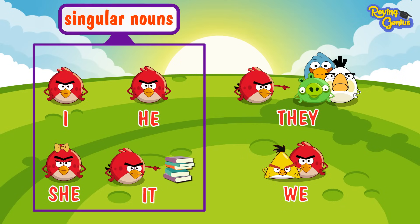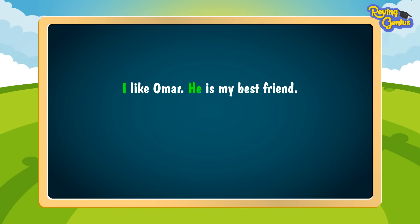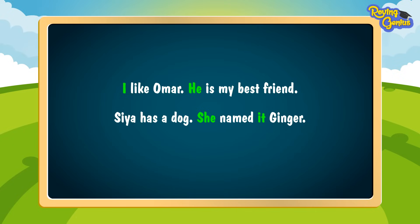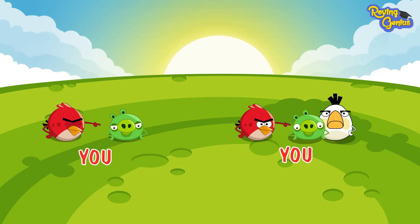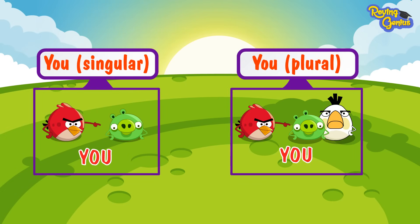The words I, you, he, she, it, they, and we are all pronouns. I, he, she, and it are used for singular nouns. They and we are used for plural nouns. For example: I like Omar, he's my best friend. Sia has a dog — she named it Ginger.